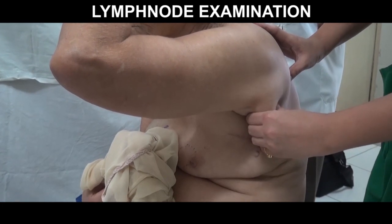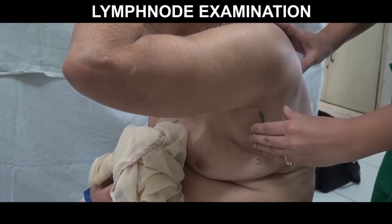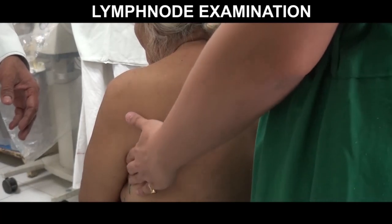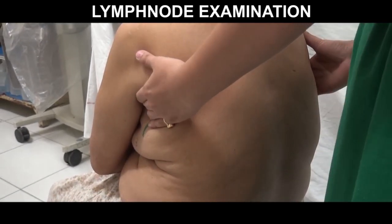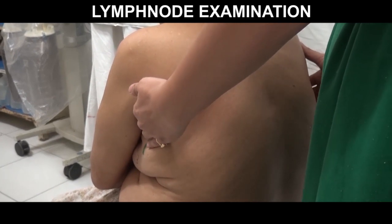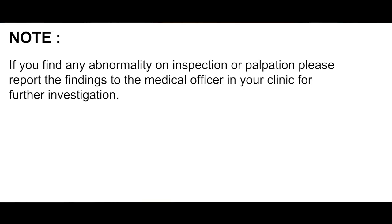Palpate the glands in the posterior part of the axilla by placing your fingers in front of the posterior axillary fold and rolling the tissue between your thumb and fingers. The patient's hands should be resting on her knees to relax the muscles of the posterior axillary fold. If you find any abnormality on inspection or palpation, please report the findings to the medical officer in your clinic for further investigation.